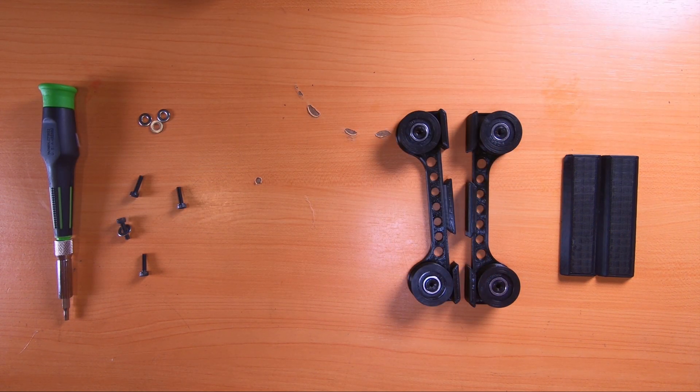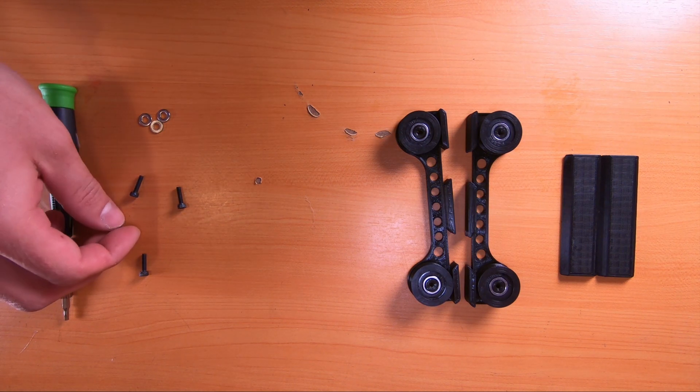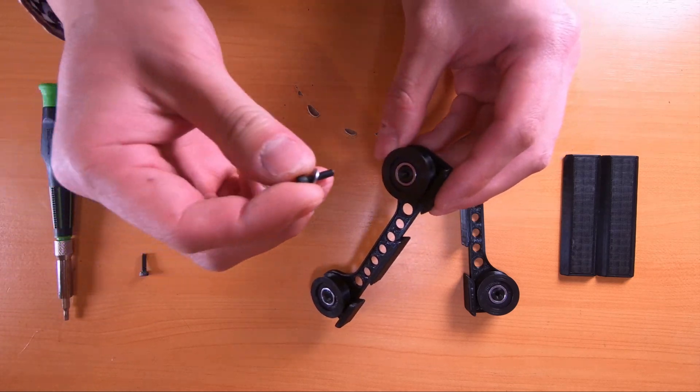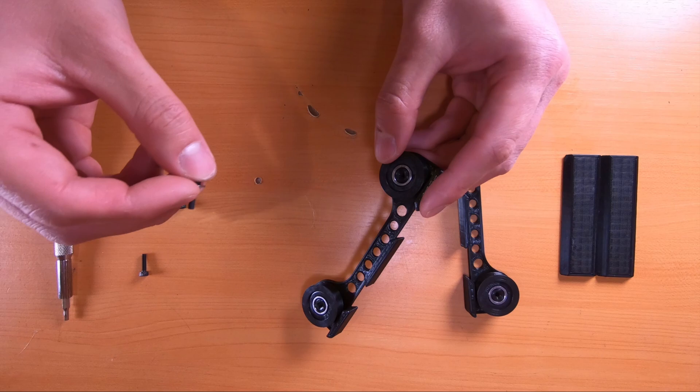Okay, now that we have the bearing rollers installed, we can go ahead and put in the screws. Now this step is pretty self-explanatory, so I'm going to speed this up. But all you do is just take a screw and a washer, insert it through the top, and go ahead and screw it in until it's snug. So this will be fast forwarded.